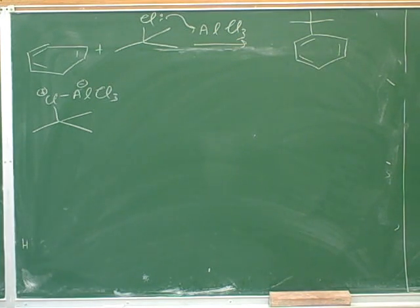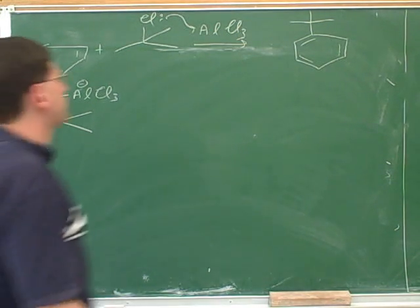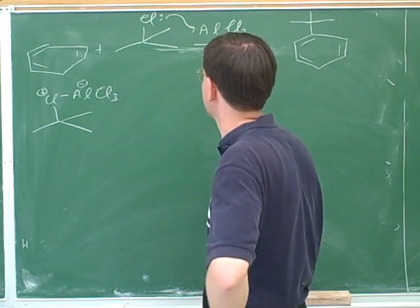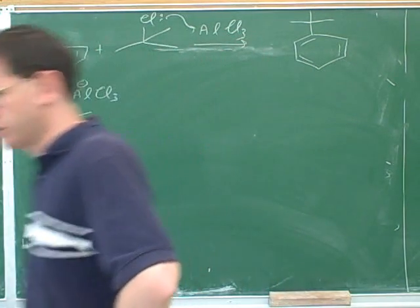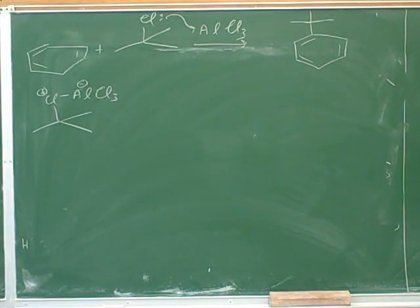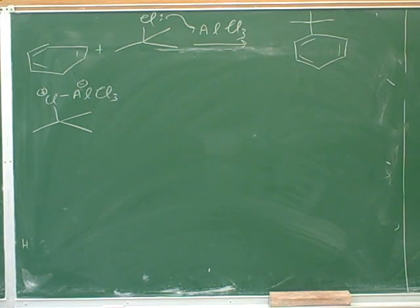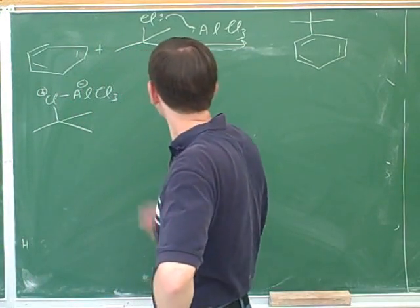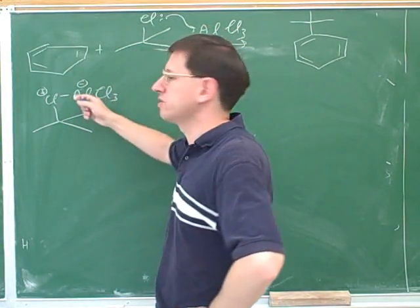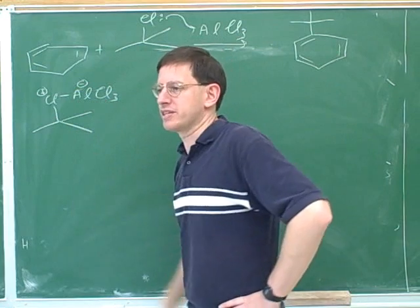It looks like you guys have made some progress — we never went through the mechanisms for the Friedel-Crafts reactions before, but it looks like you've learned those on your own, so that's good. Now, I think the most realistic mechanism here is: what was the purpose of attaching this aluminum here in the first place?